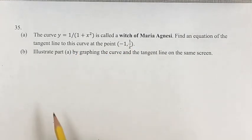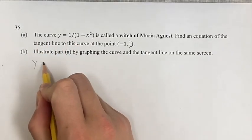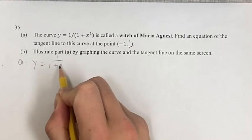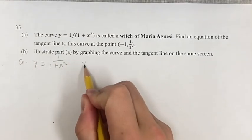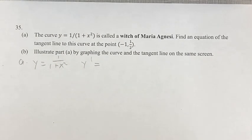First thing I want to do is to find the slope of the tangent line, which we're going to do using the derivative. So that's our function right there. And to find the derivative, we're going to use the quotient rule.